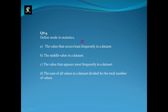Define mode in statistics. The options are: The value that occurs least frequently in a data set. The middle value in a data set. The value that appears most frequently in a data set. The sum of all values in a data set divided by the total number of values. The right option is option C.